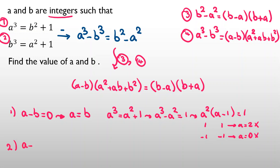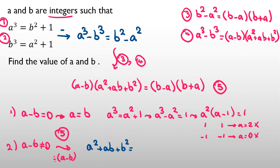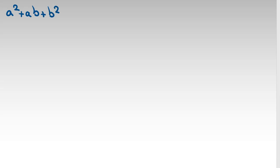Now let's consider case two: A minus B is not zero. We divide both sides by A minus B. Since B minus A equals negative of A minus B, the right-hand side becomes negative B plus A. So we reach the equation: A squared plus AB plus B squared equals negative B plus A.